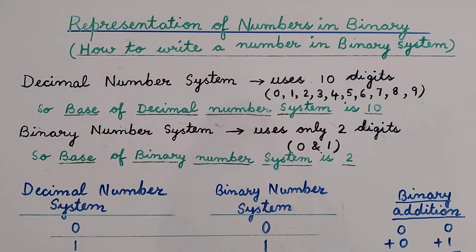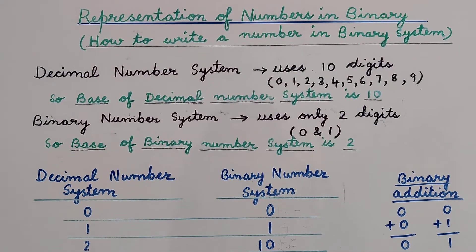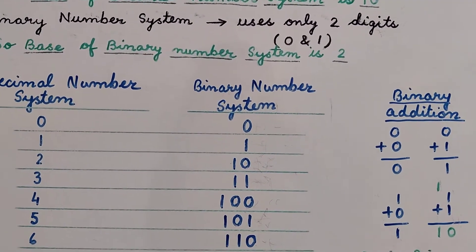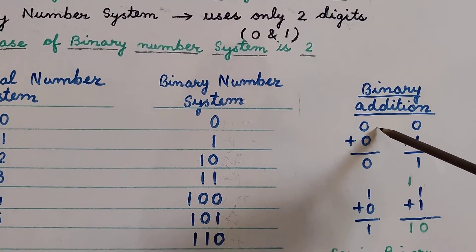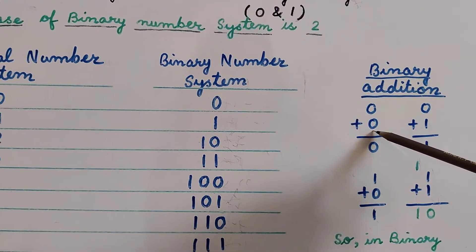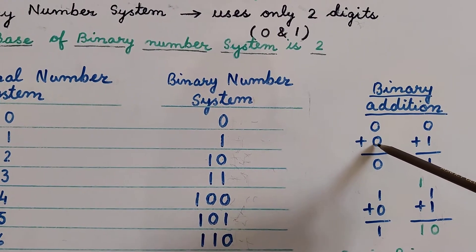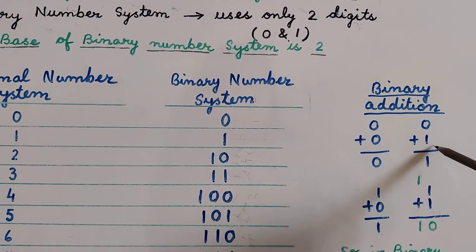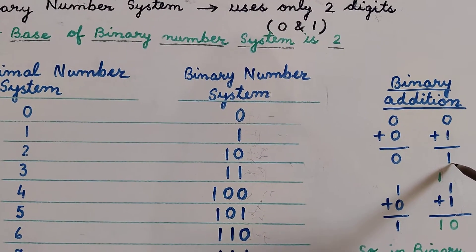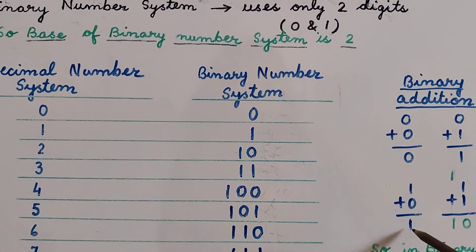Now we will learn how to write a given decimal number in binary. For this, we will first understand binary addition. In the binary number system, only two digits are used: 0 and 1. If 0 and 0 are added, the sum is 0. If 0 and 1 are added, the answer is 1. Similarly, 1 plus 0 gives 1.